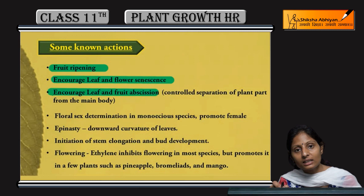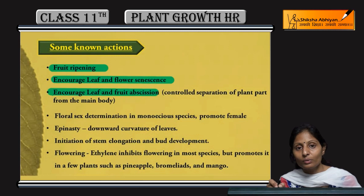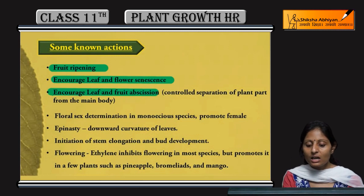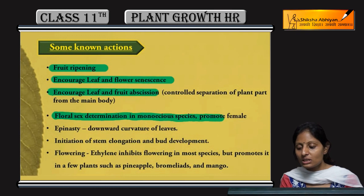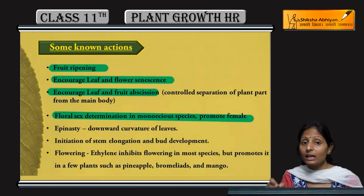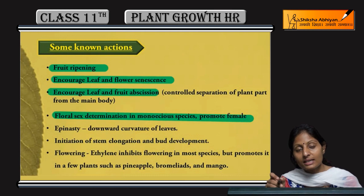Ethylene also encourages leaf and fruit abscission — that is, the dropping down of leaves and flowers — along with promoting their death. It also plays a role in floral sex determination in monoaceous species, where it promotes female flowering.